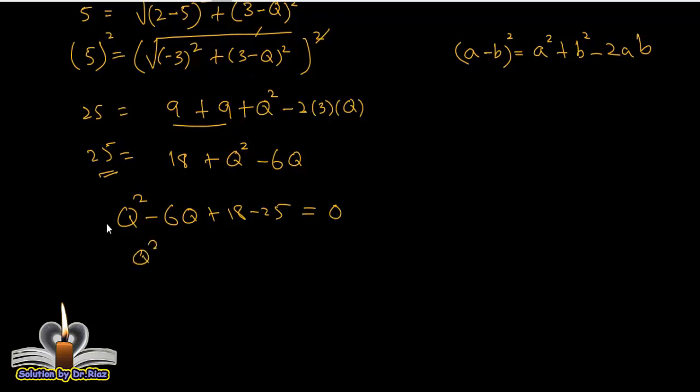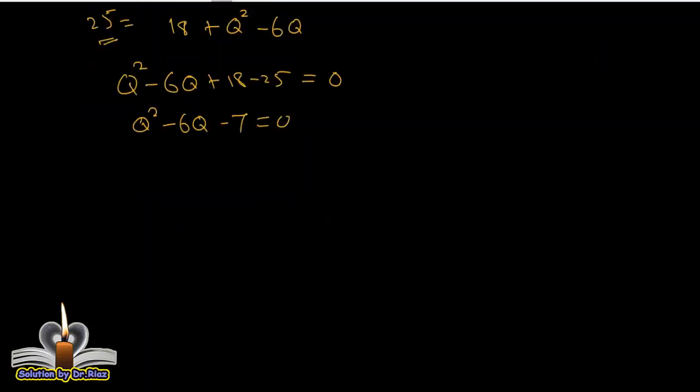So Q² minus 6Q minus 7 equals 0. Now we solve this quadratic equation as Q² minus 7Q plus Q minus 7 equals 0. From here, take Q as common.